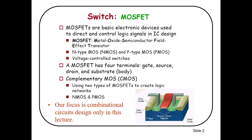MOSFETs have two types: NMOS transistors or PMOS transistors. MOSFETs are voltage controlled switches. A MOSFET has four terminals: gate, source, drain, and substrate or body terminal.